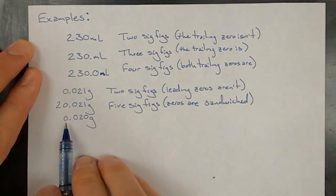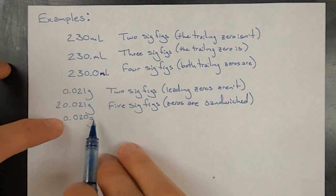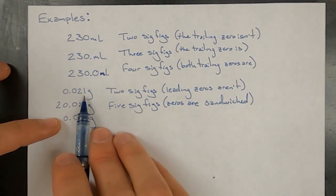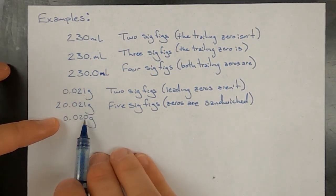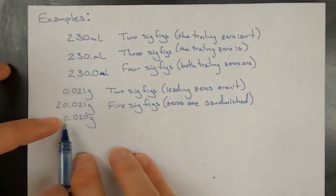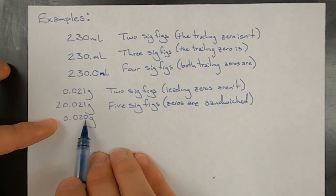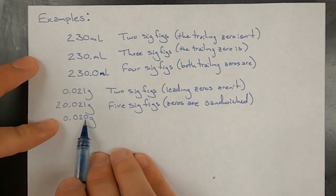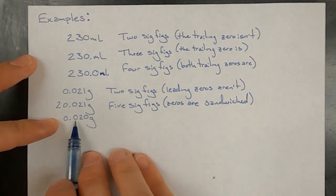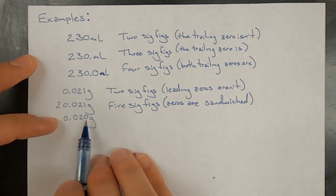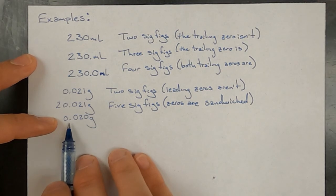In this last one, it looks similar to the first of that set except instead of a one, it ends in a zero. That is a trailing zero, and this number does have a decimal point, so that zero is significant. The leading zeros are still not significant, so this has two sig figs — the two and the trailing zero, because of the decimal point.